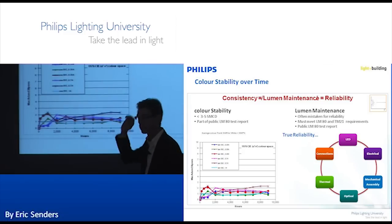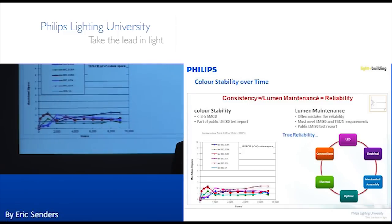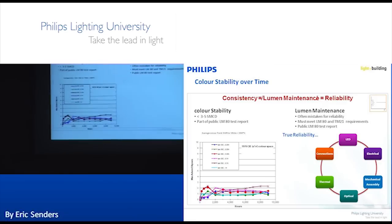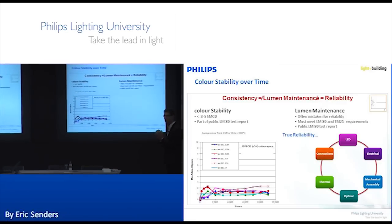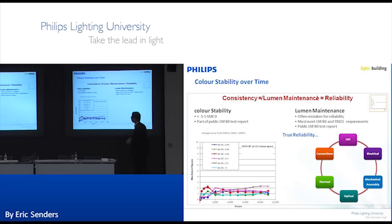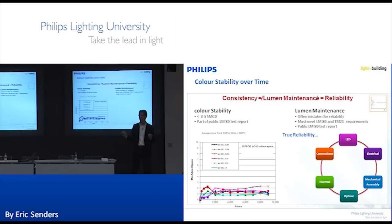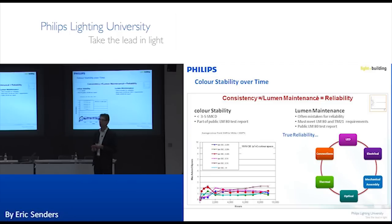It's really important to know what the color shift is over time. There are standards like LM80 that ensure you stay within certain boundaries. We've said that to be successful with LEDs we need to stay within a five-step MacAdam ellipse over a lifetime — similar to what compact fluorescent, fluorescent, and CDM sources are specifying today.